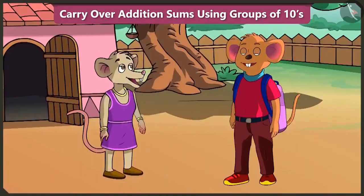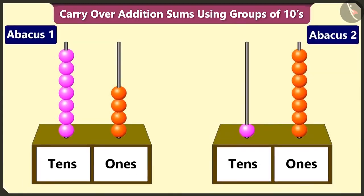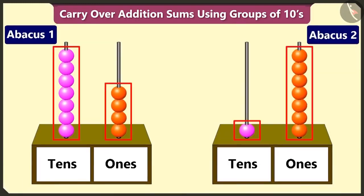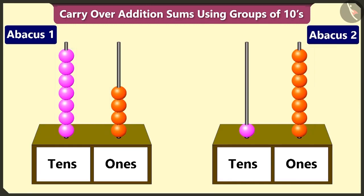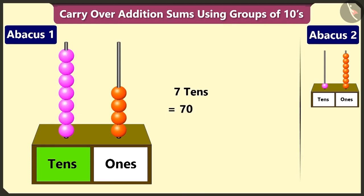We visited the zoo yesterday and learned a lot. Yes, give me some more examples to practice. Look, here are 2 abacuses. With the help of the abacus beads, try to identify the numbers and add them. In the first abacus, in the tens box, there are 7 beads — that is 7 tens, which is 70. And in the ones box, there are 4 beads, which makes it 4 ones, that is 4.